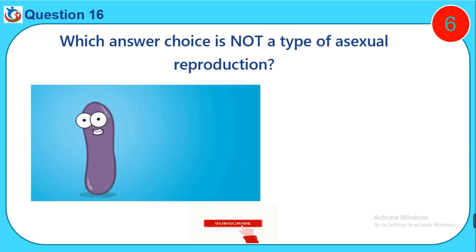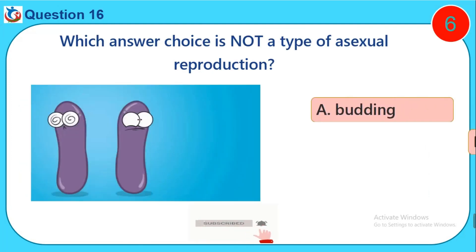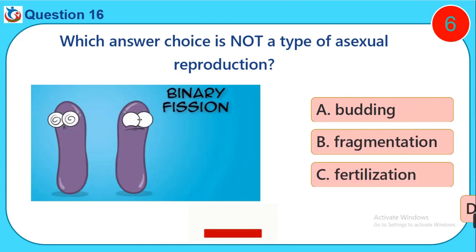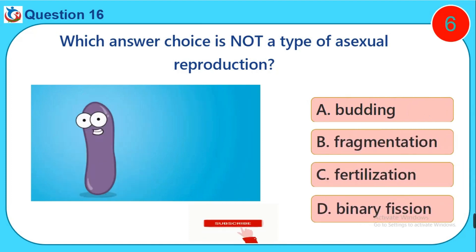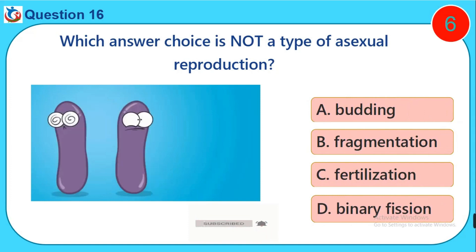Question sixteen: Which answer choice is not a type of asexual reproduction? A) Budding, B) Fragmentation, C) Fertilization, D) Binary fission.